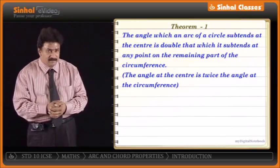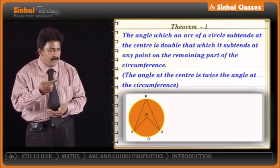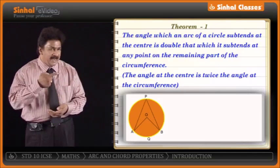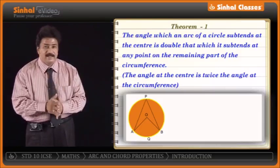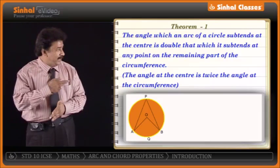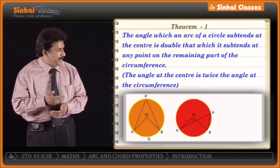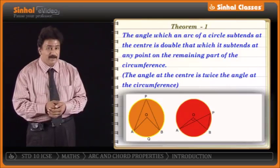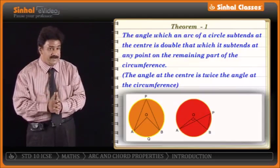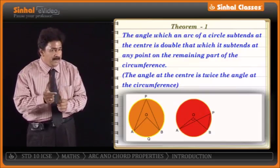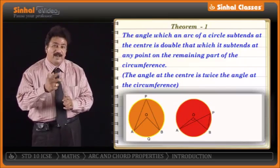We'll take some examples. AB is an arc, and the angle formed with the help of arc AQB is angle AOB. Angle AOB is nothing but twice angle APB. Similarly, in a second circle, angle AOB is double angle APB — I've taken point P on a different side of the circumference, but the concept is the same. Both angle P and angle O pass from the same arc AB; one is at the center and the other is on the circumference.